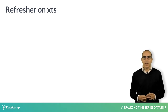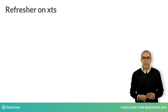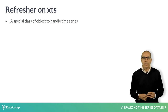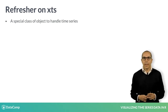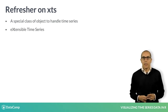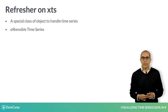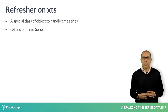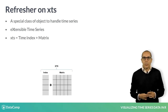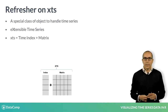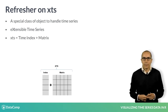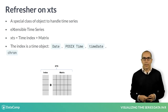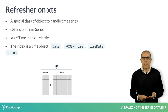In R, there is a special class of object to handle time series: the XTS object. XTS stands for Extensible Time Series, and this is a class of data that contains an array of values comprising data often in matrix form, and an index attribute to provide information about the data's ordering. The index attribute must be a true time object — Date, POSIX time, timeDate, cron, and so on.